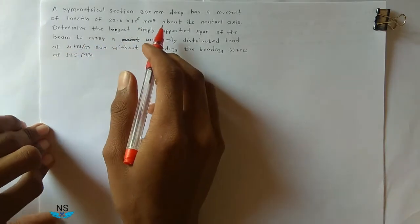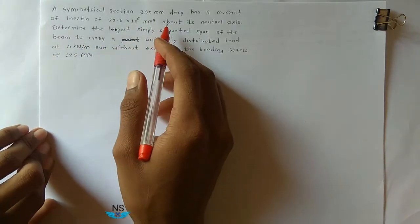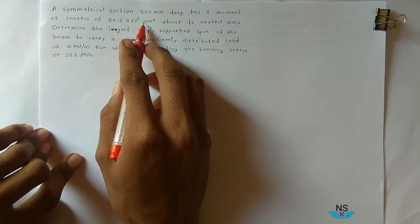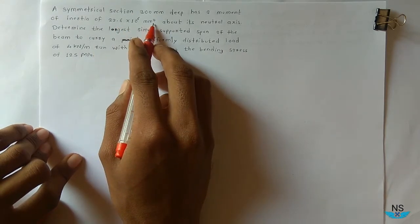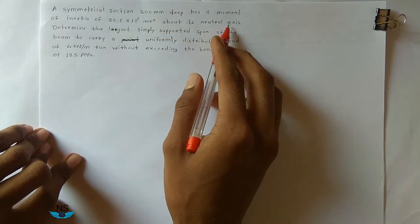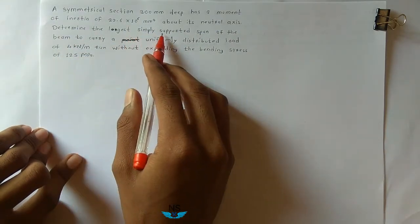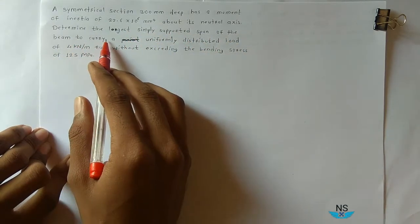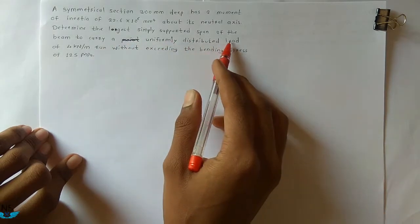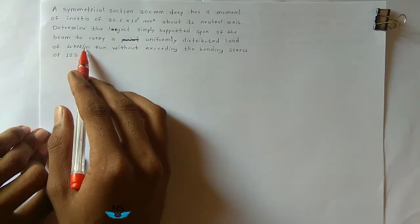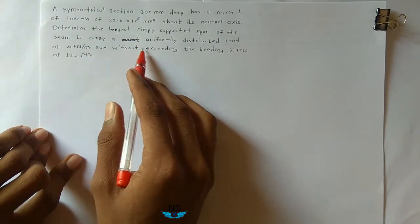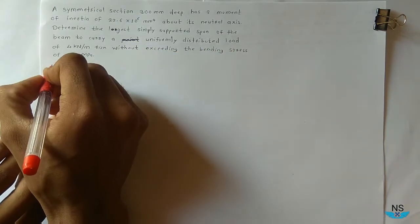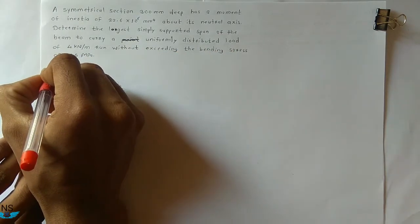A symmetrical section 300mm deep has a moment of inertia of 22.6 × 10⁶ mm⁴ about its neutral axis. Determine the longest simply supported span of the beam to carry a uniformly distributed load of 4 kN per meter without exceeding a bending stress of 125 MPa.